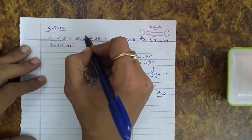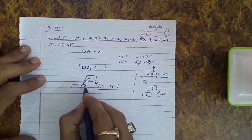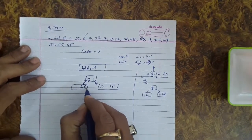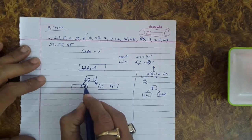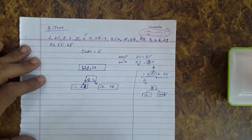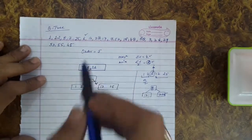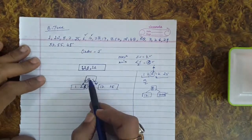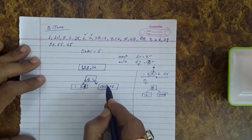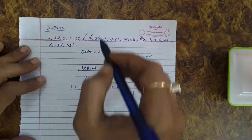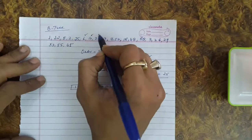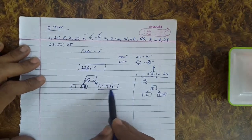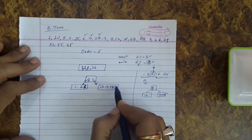Next we insert key 6. Since 6 is less than 8, it goes into the left node. Note that every insertion takes place in the leaf node only. After inserting 6, we have 1, 2, 6 in the left leaf node. Next, 28 is greater than 8, so it is inserted into the right node alongside 12 and 25.